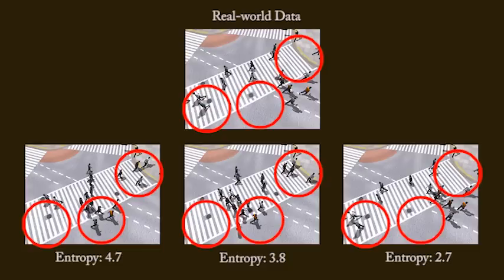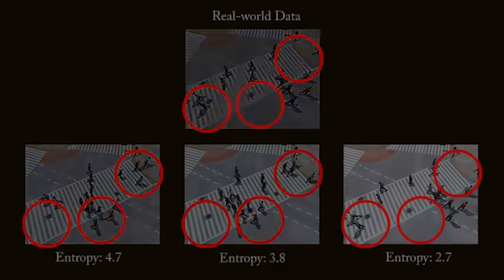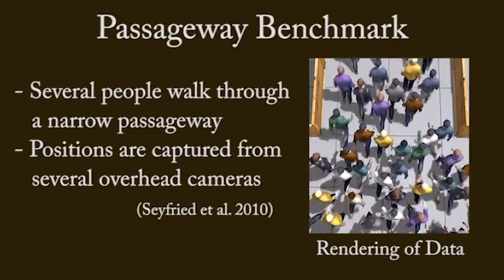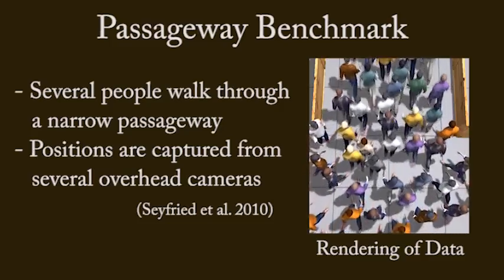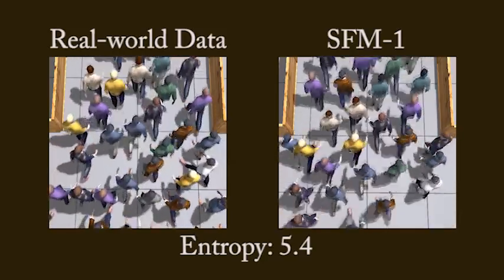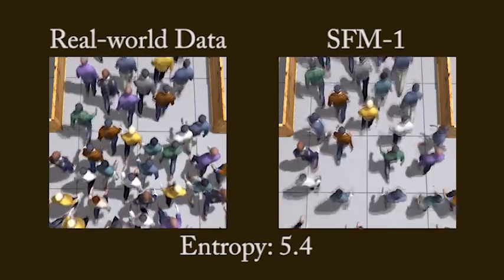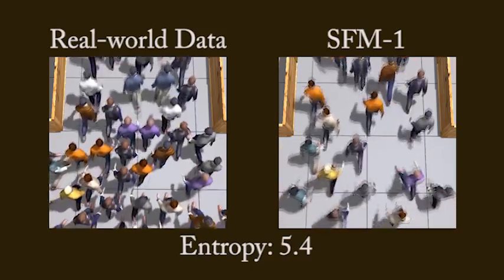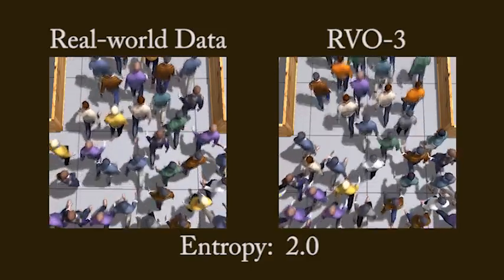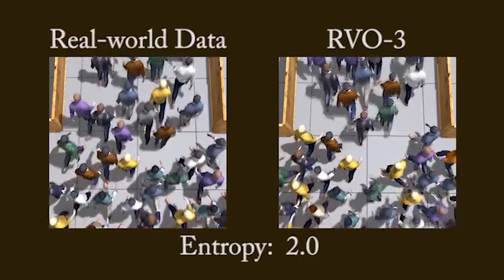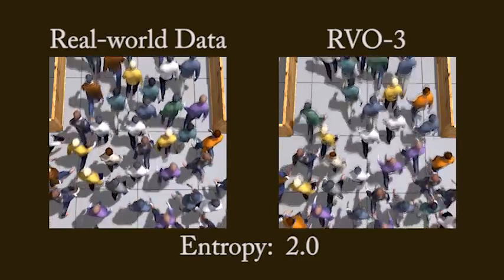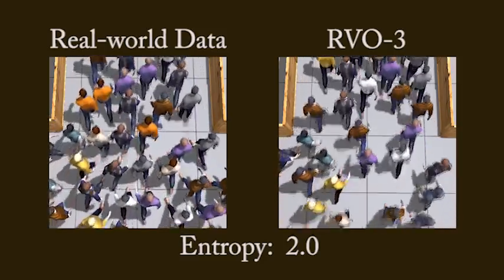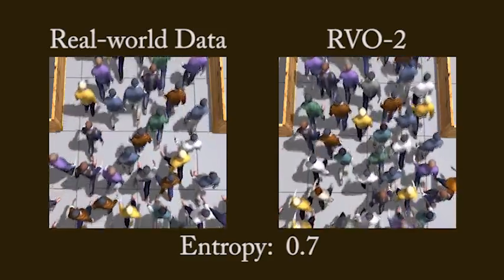Here is a comparison of the final state of each simulation. We now show results from a very large dataset consisting of hundreds of people walking through a narrow passageway. A simulation with a poor entropy score matches the data poorly in terms of both the speeds of the agents and the overall density. A simulation with a better entropy score yields densities that match somewhat better. The final simulation has a much better entropy score and matches the data better in terms of both speeds and densities.